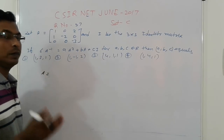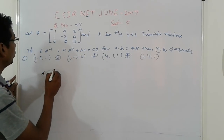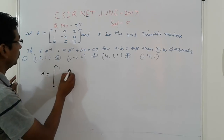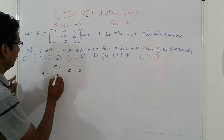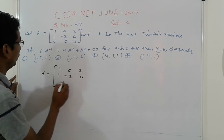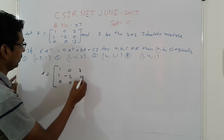So now, come to this. A is equal to what is given: 1, 0, 2; 1, minus 2, 0; 0, 0, 3.